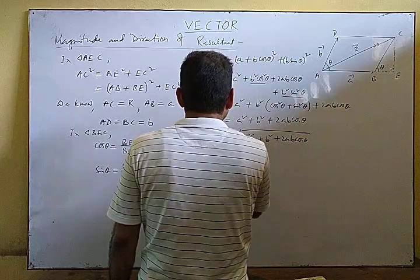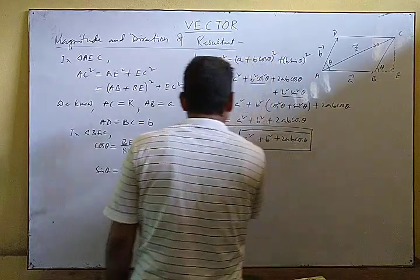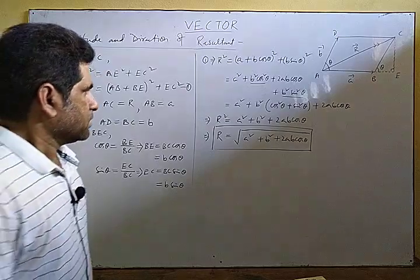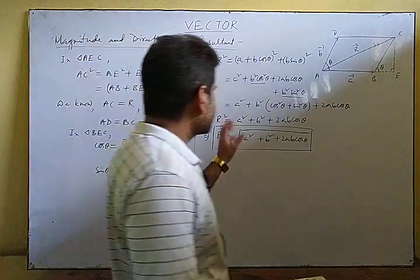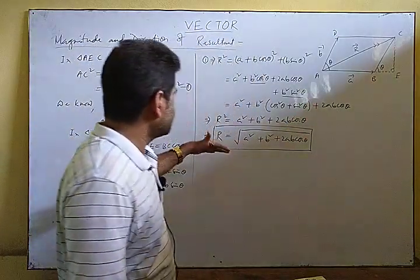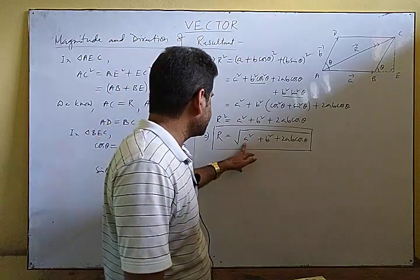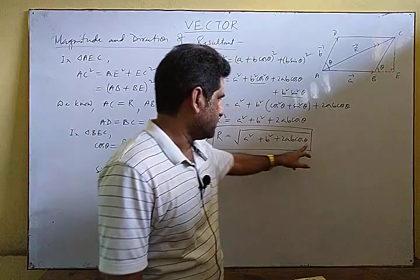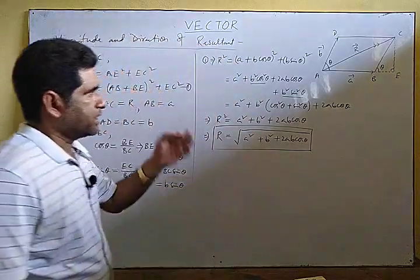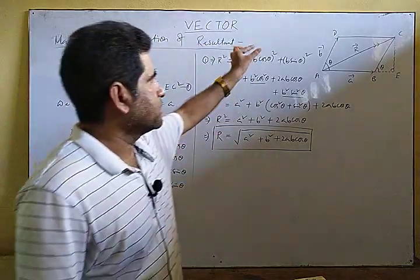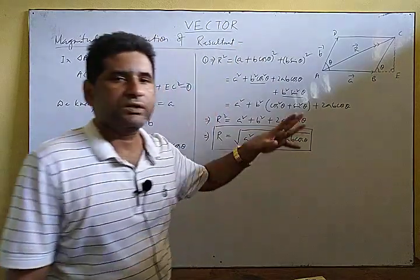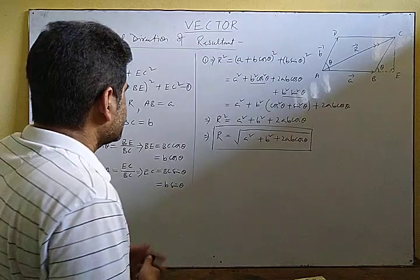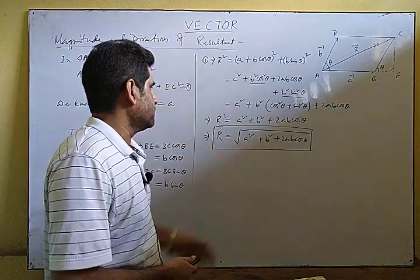So the resultant magnitude formula is: R = √(A² + B² + 2AB cos θ). This is the formula for the magnitude of the resultant vector, where A and B are the magnitudes of the two vectors and θ is the angle between them. Given A, B, and θ, you can find the resultant magnitude R.